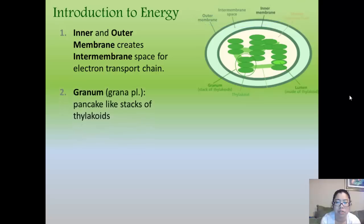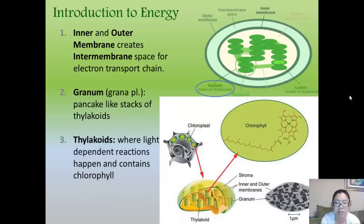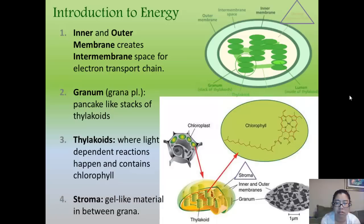The granum, which is singular for grana, are little thylakoids stacked up like pancakes. Thylakoids are where light-dependent reactions happen, and they also contain chlorophyll. The stroma is a gel-like material in between the grana. And in the lower right-hand corner, you will see the cross-sectional picture from an electron microscope of a chloroplast.